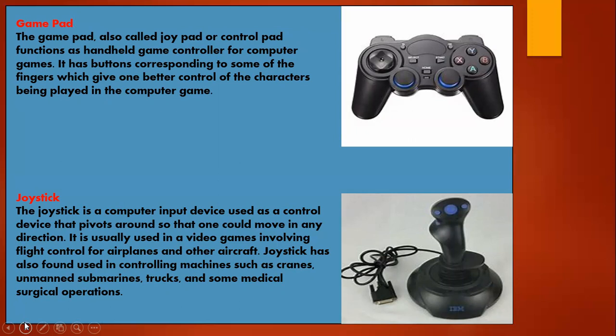Joystick. A joystick is a computer input device used as a control device that pivots around so that one could move in any direction. It is usually used in video games involving flight control for airplanes and other aircraft. The joystick has also found use in controlling machines such as cranes, manned submarines, trucks, and some medical surgical operations.